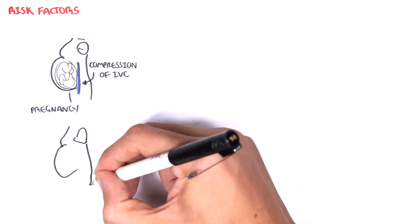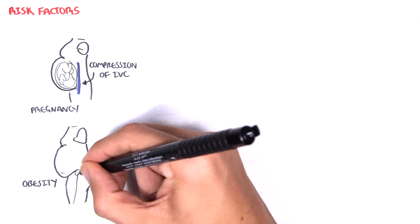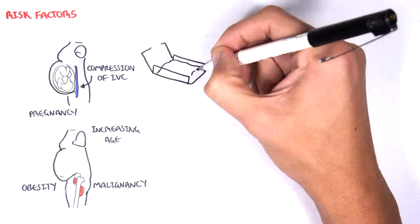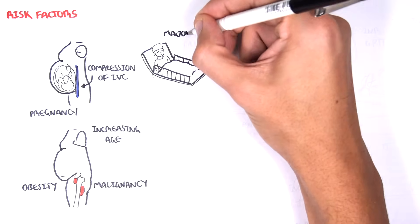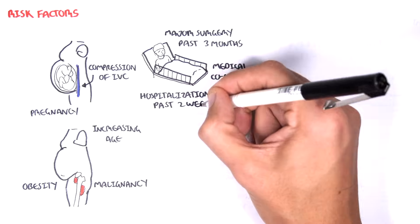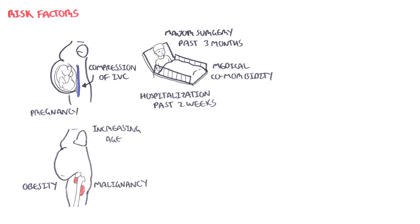Other risk factors for developing deep vein thrombosis include increased age, obesity, malignancy, having had a major surgery for the past 3 months, having medical comorbidities, being hospitalized in the past 2 weeks.